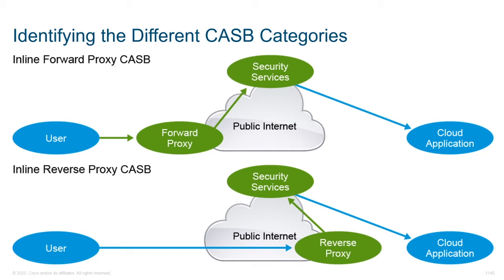The inline forwarding proxy is essentially going to sit a little bit closer to the end user. When we have services that the user is going to initiate, we are initiating those connections to the resource and we're closer to that user. There are pros and cons to both — the downfall is that it could cause problems within our data path, there could be a limited nature of support, and when we look at any cloud-to-cloud type communication, we aren't going to see any support for that.